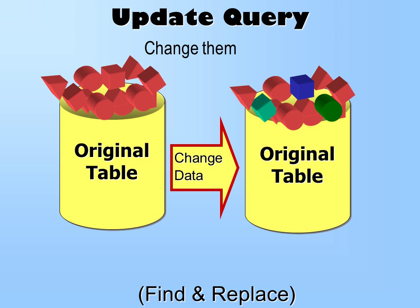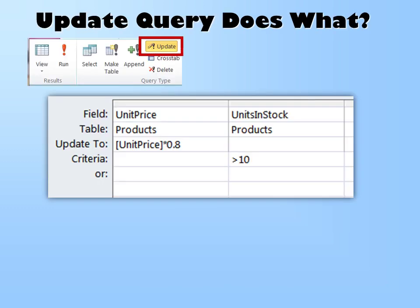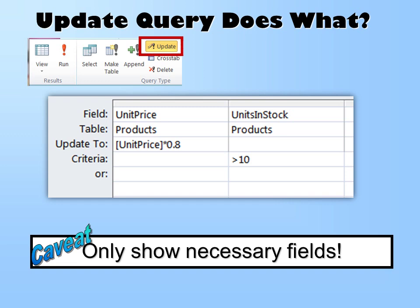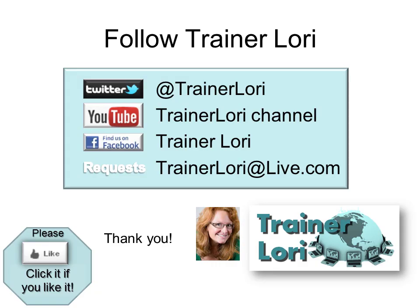We also have the Update query — that's when you want to change the data. It's like a very powerful find and replace. You start with a select query, and in this case we want to update unit price: take the unit price and multiply it by 80% if the units in stock are greater than 10. The caveat: only show the necessary fields — just the ones you're going to apply criteria on and those you're going to update. That's all for this time. I hope you enjoyed it. If you liked it, please click Like. We'll see you next time!